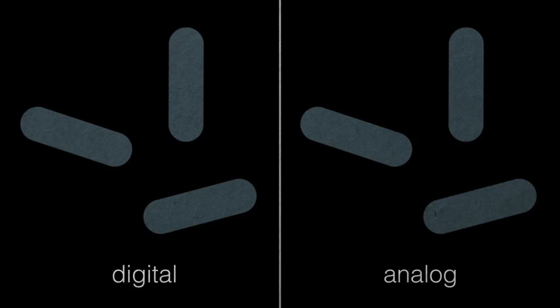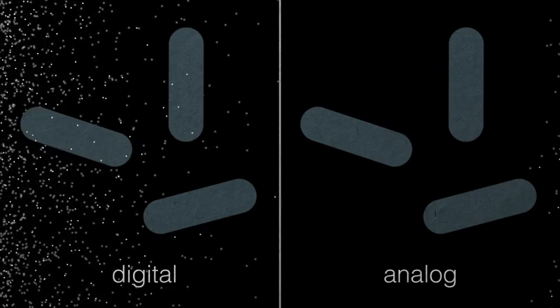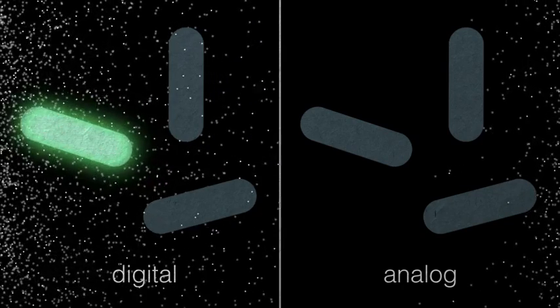Say that we wanted to make a cell that responded to the presence of a certain small molecule. A cell with a digital circuit would turn on expression of the output, in this case a fluorescent protein, in an all or nothing manner.